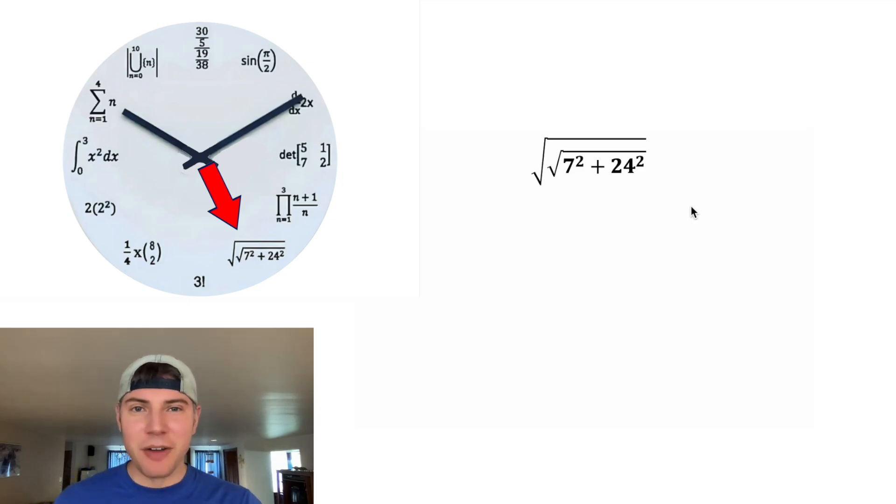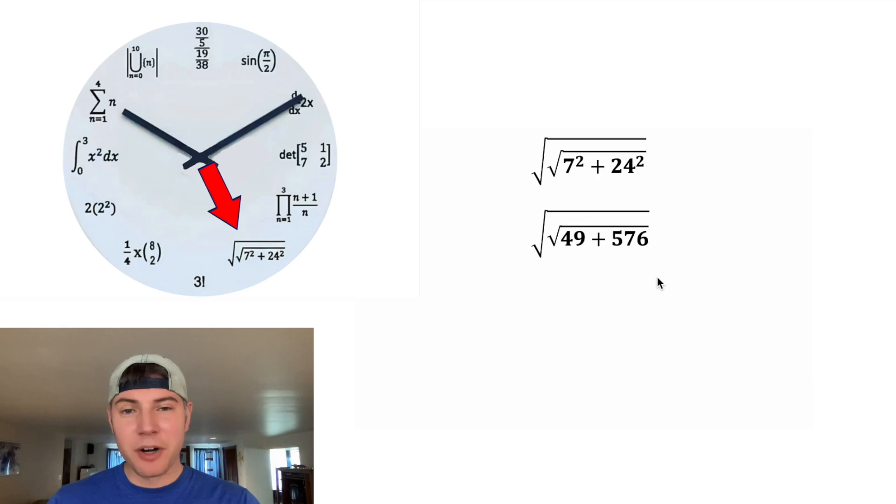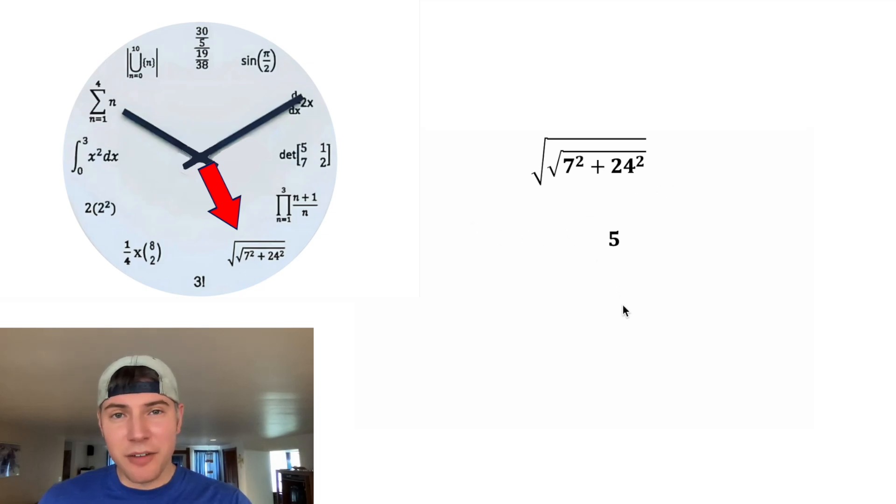And now we've got this double square root we get to evaluate. Let's copy it down. 7 squared is equal to 49, 24 squared is equal to 576, 49 plus 576 is equal to 625. The square root of 625 is 25, and the square root of 25 is 5, and that's why this is at the five o'clock hour.